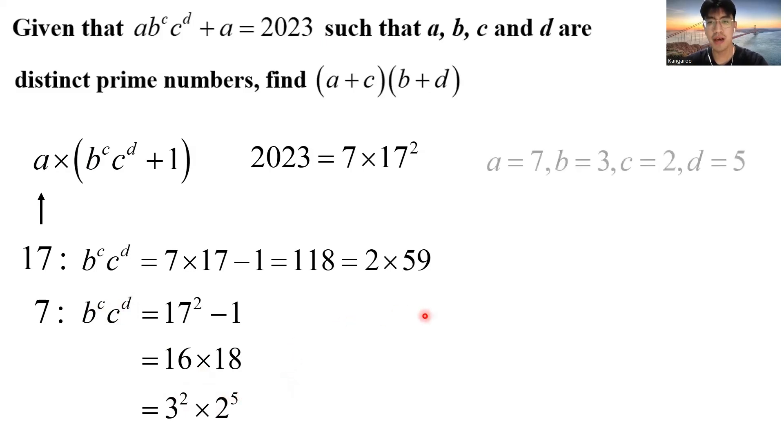So I can conclude that a equals 7, b equals 3, c equals 2, and d equals 5. Therefore, the final answer to this problem is simply 72. We see that this is such a complicated problem at the first sight. But once you factorize the a and you compare it with the prime factorization of 2023, we immediately narrow down all the possibilities of a to just two numbers, which we can investigate both cases to see which one is correct.